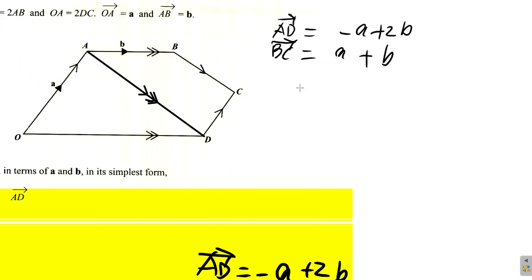Now what is the magnitude of AD? The magnitude of AD would be, in this case, AD would be the square root of negative a squared plus 2b squared. That's the magnitude of AD. What's the magnitude of BC? It would be the square root of a squared plus b squared.